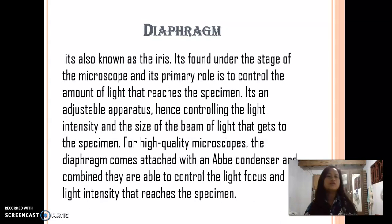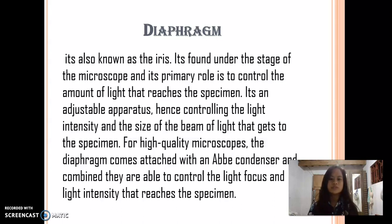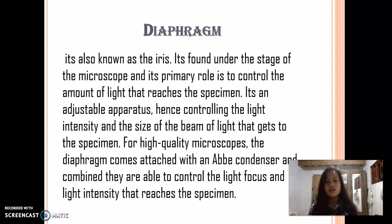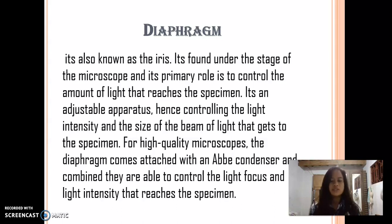Diaphragm, also known as the iris — it's found under the stage of the microscope. Its primary role is to control the amount of light that reaches the specimen. It's an adjustable apparatus, hence controlling the light intensity and the size of the beam of light that gets to the specimen. For high-quality microscopes, the diaphragm comes attached with the Abbe condenser, and combined they are able to control the light focus and light intensity that reaches the specimen.